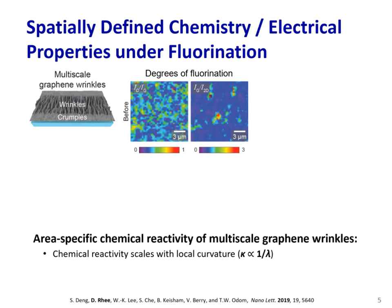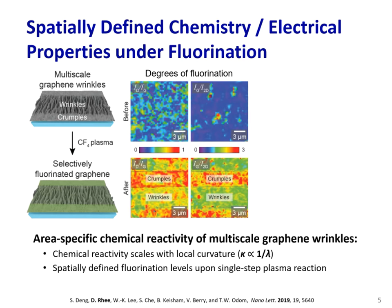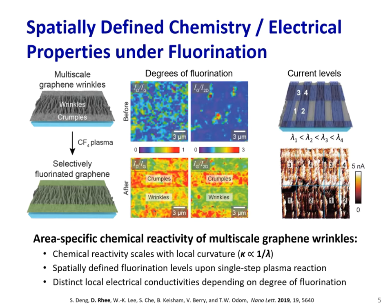This slide shows how the multi-scale wrinkles can be useful in engineering the properties of graphene. We arranged graphene nanostructures into line patches with wrinkles and crumples side by side; these nanostructures have different local curvatures. After fluorination using CF4 plasma treatment, graphene exhibited spatial contrast in Raman peak ratios that scales with the fluorination levels, because the crumple regions were more reactive than wrinkle regions with a lower peak curvature. Moreover, because electrical conductivity of graphene decreases with the degree of fluorination, our method created microdomains with distinct electrical properties in a single-step plasma treatment without needing to apply multiple masking and functionalization processes.